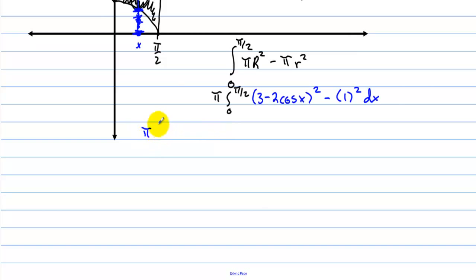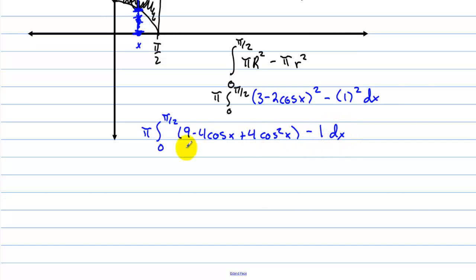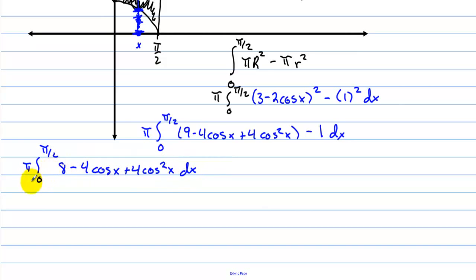Expanding, we have pi times the integral from 0 to pi over 2 of 9 minus 4 cosine x plus 4 cosine squared x, minus 1 dx. That simplifies to pi times the integral from 0 to pi over 2 of 8 minus 4 cosine x plus 4 cosine squared x dx. Factoring out a 4, we get 4 pi times the integral from 0 to pi over 2 of 2 minus cosine x plus cosine squared x dx.